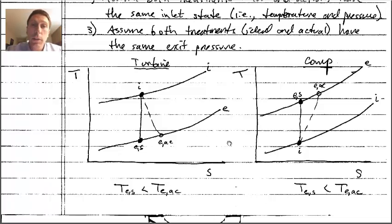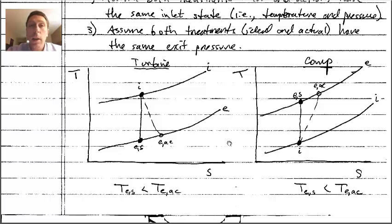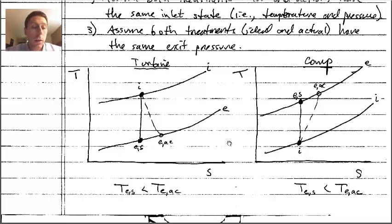That covers lecture number 13. In lecture number 14 on Thursday, we'll work through an example to calculate isentropic efficiencies for different devices using different pieces of information. You now have enough information to start homework number 6, and if you can start it before Thursday, one of the problems may be used as an example problem during the lecture. If you have questions, feel free to email me or bring them to class on Thursday.